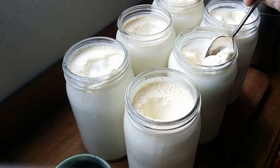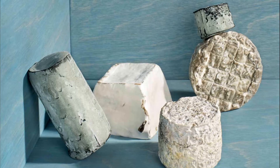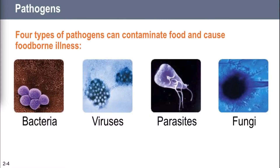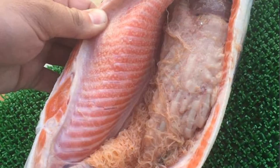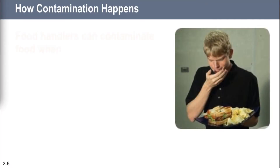There's some fungi that makes amazing yogurt and some mold that makes amazing cheese. Not all fungi are bad, not all bacteria are bad. The viruses and parasites, though — they're all gross. How does a food handler, somebody who works in a restaurant, get people sick? By contaminating food, and they do it in four ways.